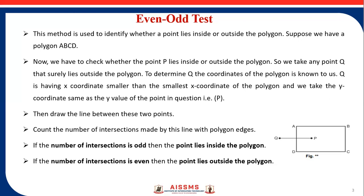Count the number of intersections made by this line with the polygon edges. If the number of intersections is odd, then the point lies inside the polygon. If the number of intersections is even, then the point lies outside the polygon. In this figure, P is inside the polygon and Q is outside. The line PQ intersects only edges AD and AB, so the count is 1. Since 1 is odd, we say that point P is inside the polygon.